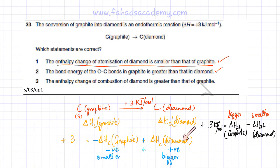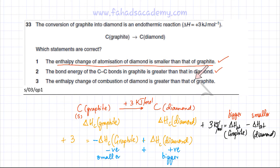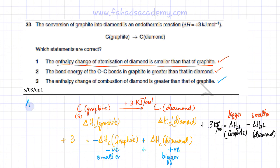Therefore, the enthalpy of combustion of diamond is greater than that of graphite, and this third statement is also correct. So all three statements are correct, and according to the marking key, the correct option is A.